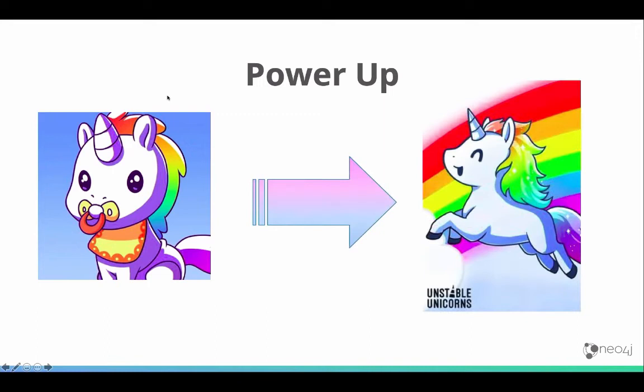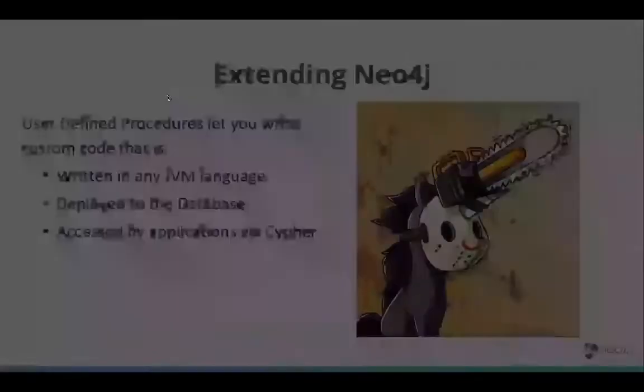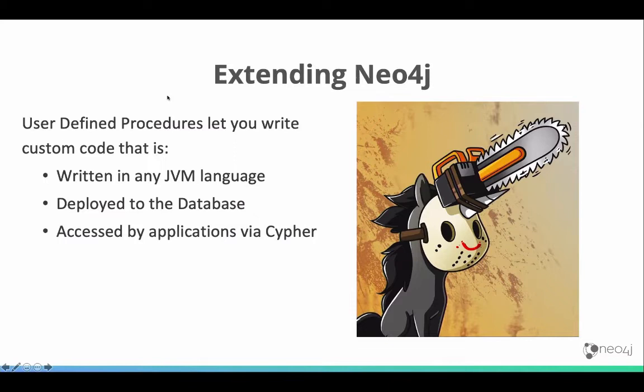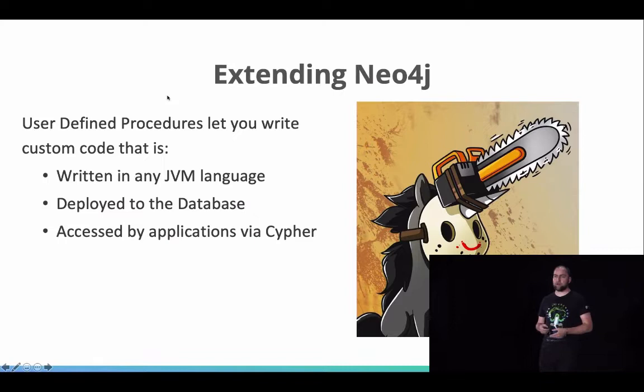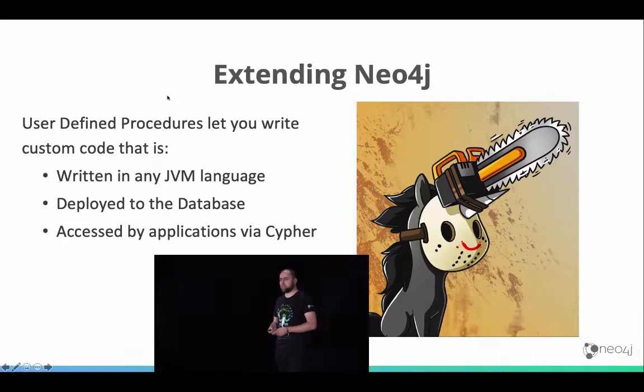You might have been using Neo4j for a while and might have started with APOC, but I want you to power up from becoming a baby unicorn to a full-fledged rainbow unicorn after listening to this talk. This will be a very fast-paced overview. You don't have to take notes — you can watch the talk later. In general, Neo4j is a database, and you would use it from a client. But oftentimes you want to extend it, and Neo4j allows you to write user-defined procedures and functions in any JVM language that can be deployed and accessed within Cypher and your applications.